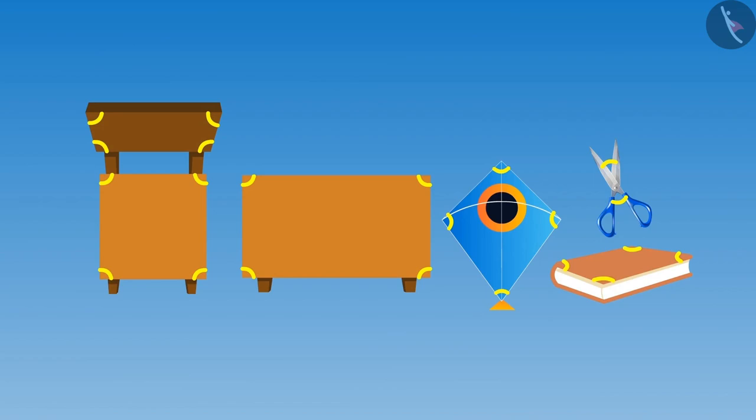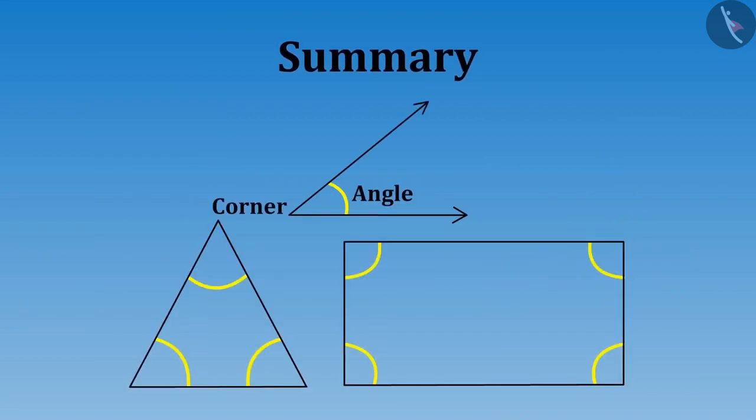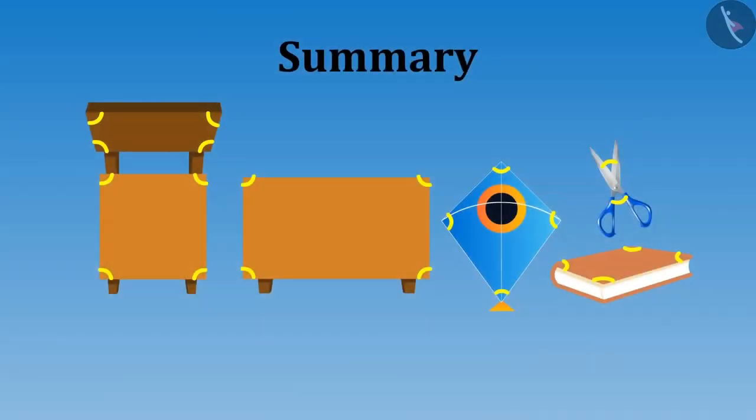In this video, we have learned about corners, angles formed in them and the angles formed in closed figures. Did you observe that the angles in figures identified by Meena and Riva are closed figures? Just like this triangle and rectangle.